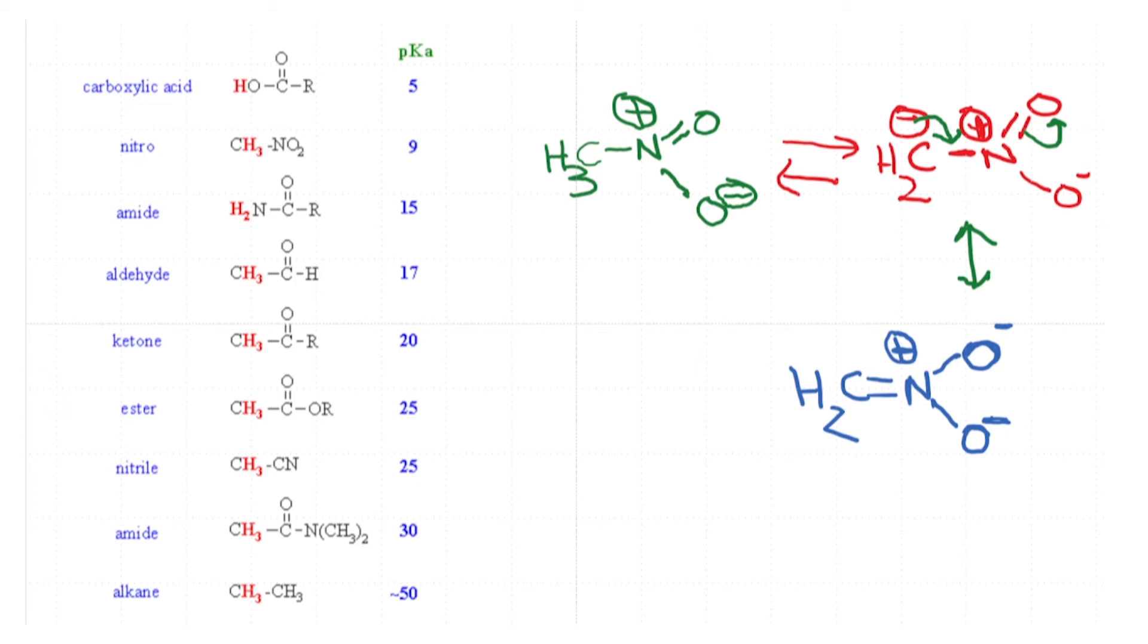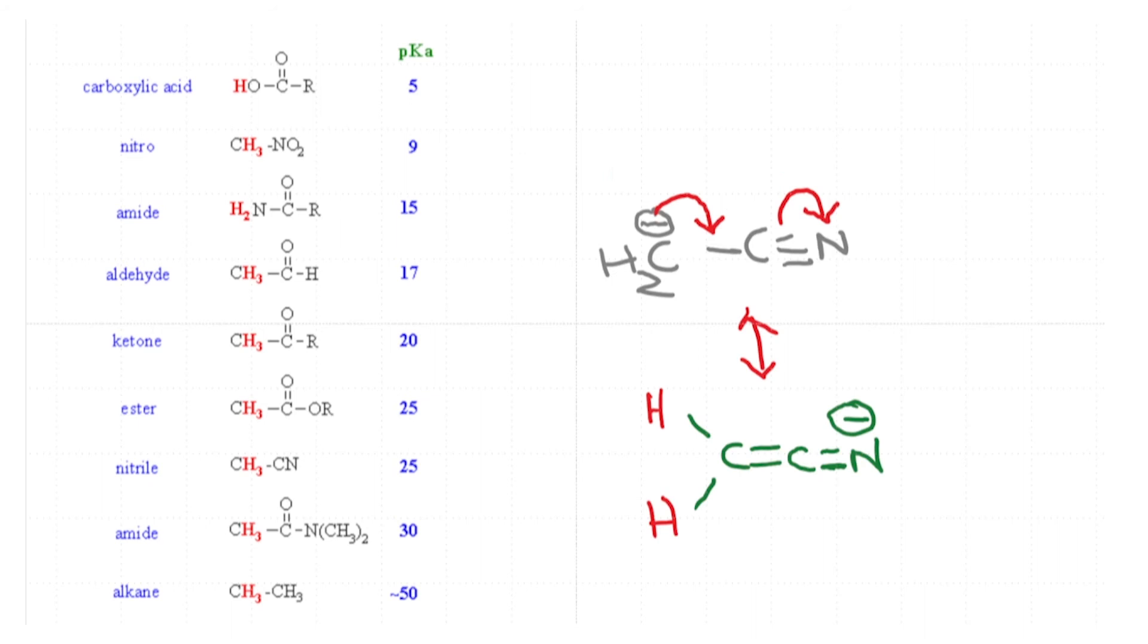If we go down this table, we have already looked at amides, aldehydes and ketones and esters. The next molecule that we are going to look at is the nitrile. Nitrile is a very interesting molecule. The carbon here is sp-hybridized and the nitrogen is also sp-hybridized. There is a triple bond over here. Once the nitrile undergoes deprotonation, it forms this anion and this anion, one can draw resonance form where this negative charge is actually delocalized across these three atoms. This makes the molecule certainly more acidic than methane, but this conjugation and the resulting stability is not as high as what you would achieve with a ketone.